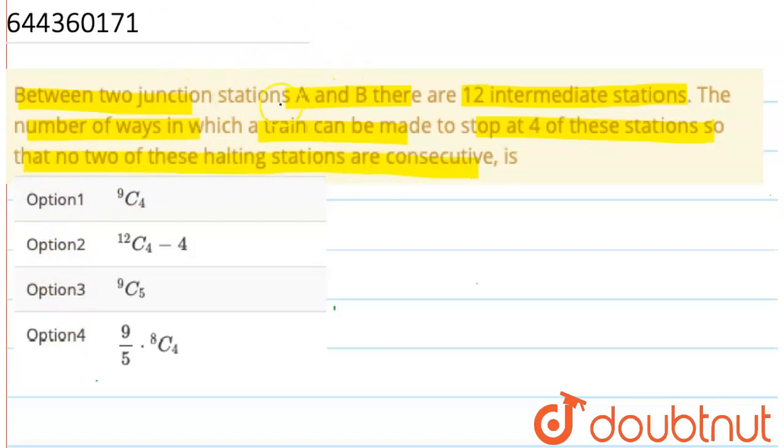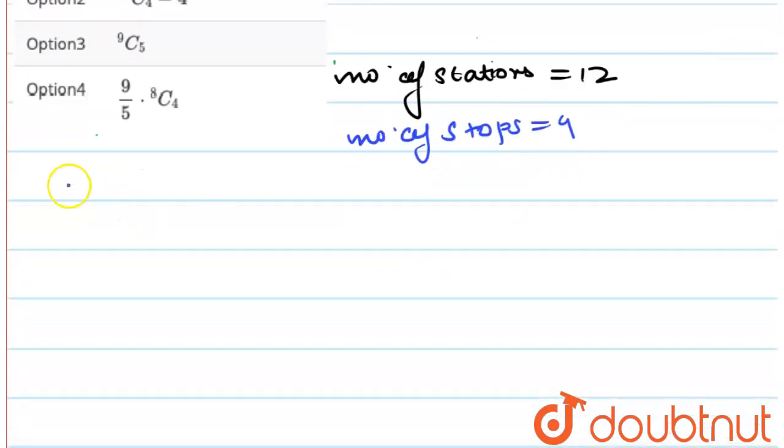So as you can see, there are two junction stations that is A and B. And number of stations intermediate which you are given is 12. Then number of stops which you are given is 4. So number of non-stops can be 12 minus 4, that is 8.